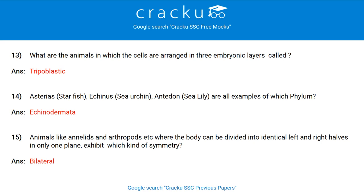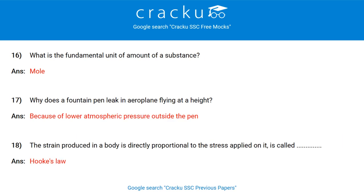Animals like annelids and arthropods where the body can be divided into identical left and right halves in only one plane exhibit which kind of symmetry? Bilateral symmetry. What is the fundamental unit of amount of substance? Mol. Why does a fountain pen leak in an aeroplane flying at a height? Because of lower atmospheric pressure outside the pen. The strain produced in a body is directly proportional to the stress applied on it — this is called Hooke's Law.